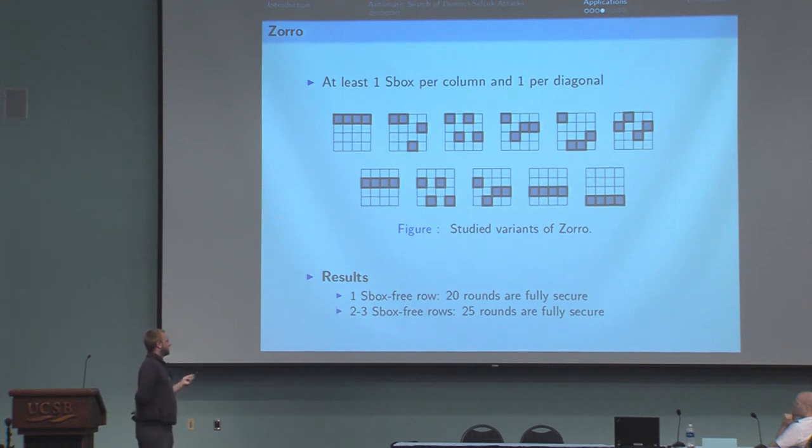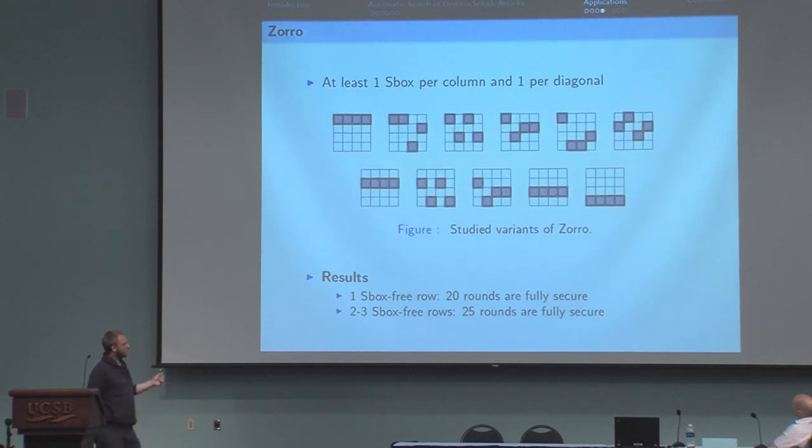And the original version of Zorro has only 24 rounds. So we have an attack against the full Zorro, but it is not as efficient as the best attack on Zorro. That's another application that shows how useful can be our tool to designers when designing a new block cipher to select between two designs.